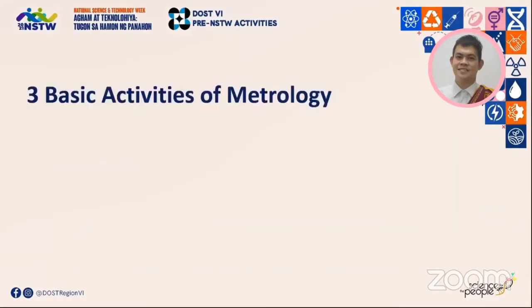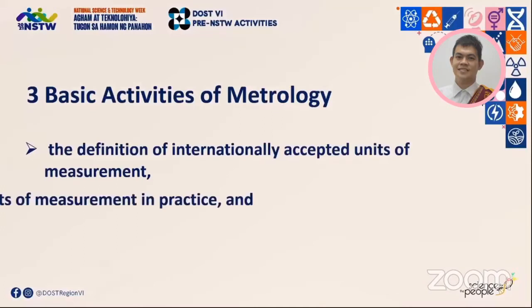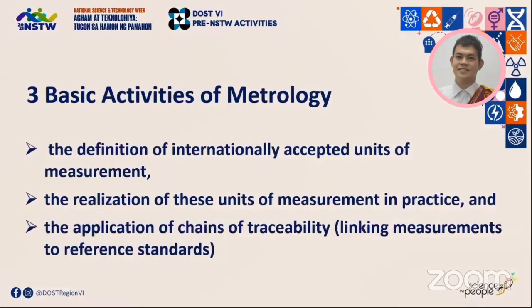The three basic activities of metrology include the definition of internationally accepted units of measurement, the realization of measurement in practice, and the application of chains of traceability linking measurements to reference standards. As such, metrology is regarded as the key to achieving accuracy. The aim is to provide accurate and therefore reliable measurements for trade, health, safety, and the environment. It is especially important in processes where products need to meet strict tolerances.